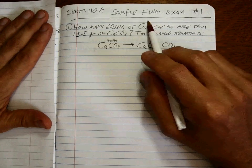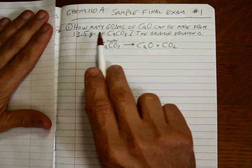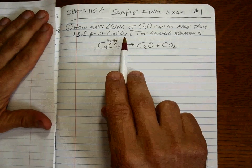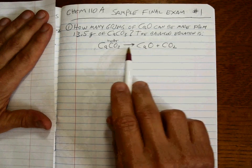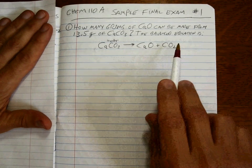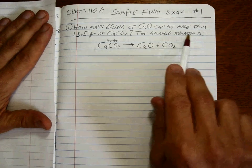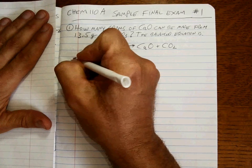Okay guys, it's the home stretch, the sample final exam. Here's problem number one: How many grams of calcium oxide can be made from 13.5 grams of calcium carbonate? The balanced equation is: if you heat up calcium carbonate, it falls apart into calcium oxide and carbon dioxide gas. If it says it's balanced, you know it's balanced.